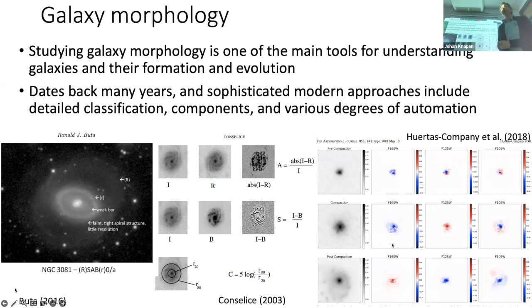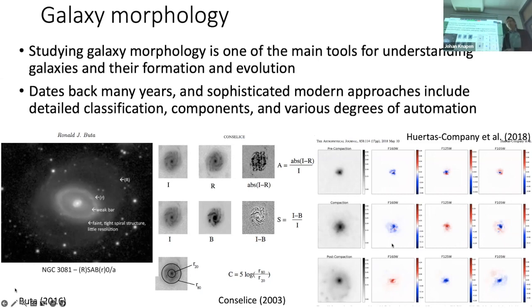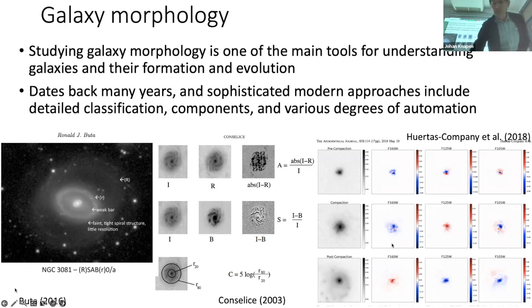These approaches also include looking at components of galaxies and various degrees of automation. What you see in the middle is one of the most used and successful applications of dividing galaxy images into components. Conselice derived his CAS scheme — concentration, asymmetry and smoothness — and with those three parameters you can classify galaxies in ways that tell you about the physics of galaxies. On the right is an example of using machine learning to classify galaxy images into several classes.